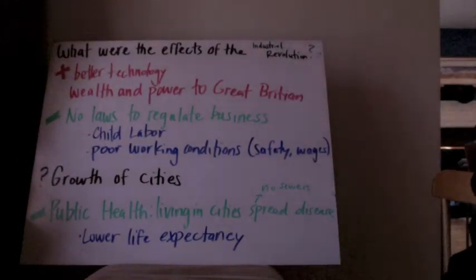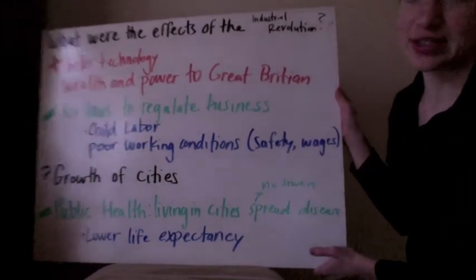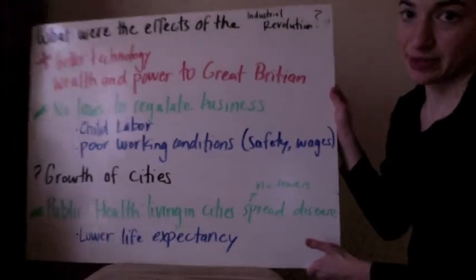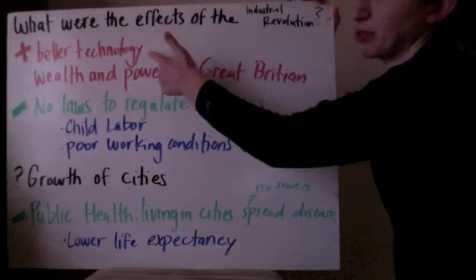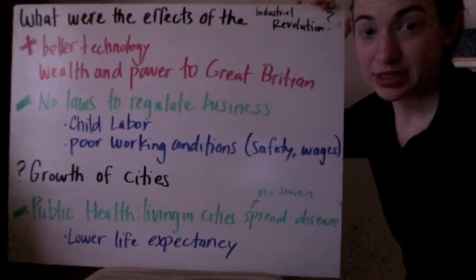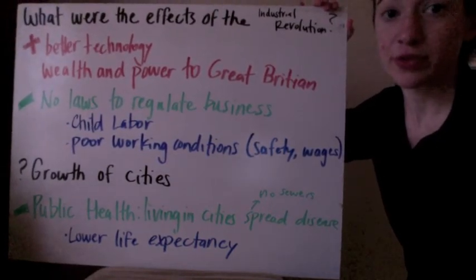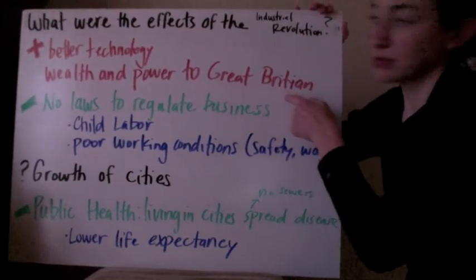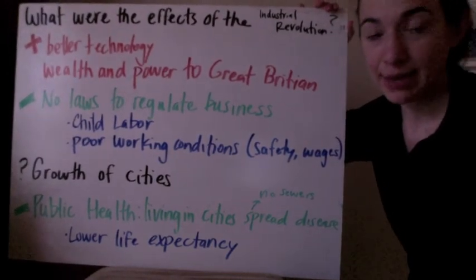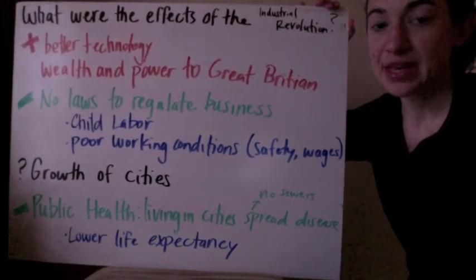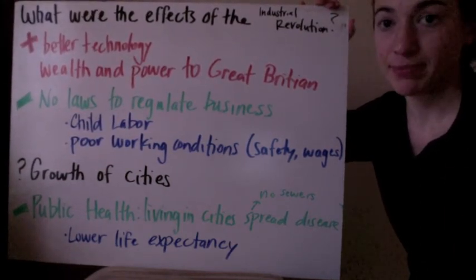So what were the effects of the Industrial Revolution? There are some positives and some negatives — like pretty much everything in life. A positive is new technology; really, the technology we have today all started with the Industrial Revolution, so we can thank it for those things. Another positive was wealth and power to Great Britain. Maybe good or bad depending on your perspective, but it was good for them that they came up with these inventions and moved to industry, so they became wealthy and powerful through it.